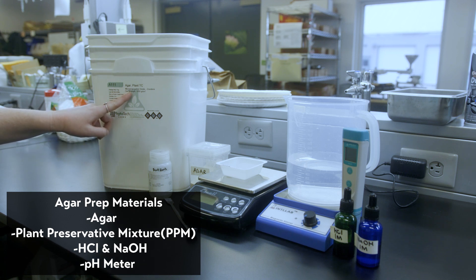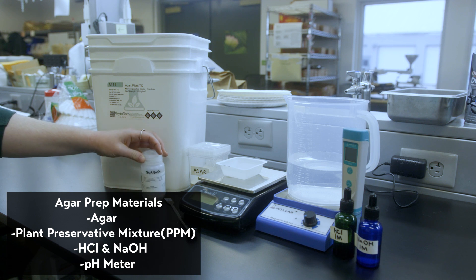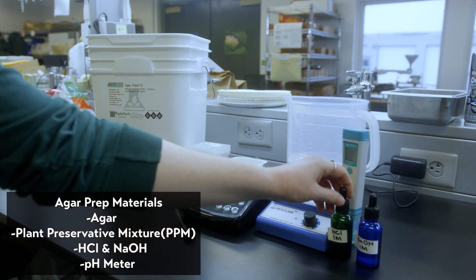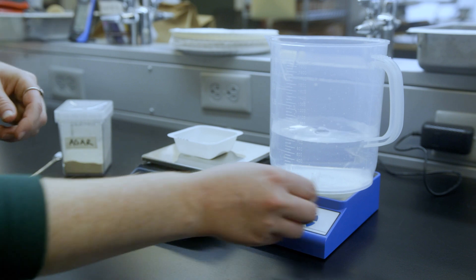To prepare agar, here are the supplies needed: agar, plant preservative mixture or PPM, which helps prevent mold growth, HCL, NaOH, and a pH meter.